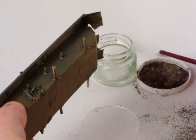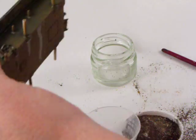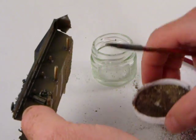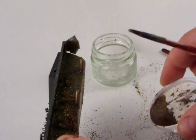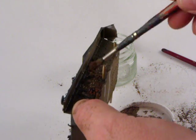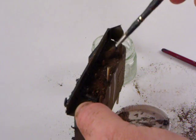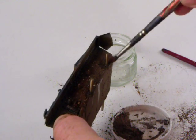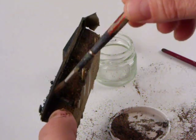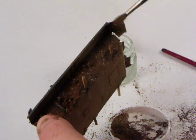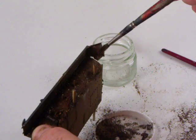All right, so now I'm taking some more of this pigment, sprinkle it on, move it around until the solvent just doesn't absorb anymore. The solvent in the flat mix.